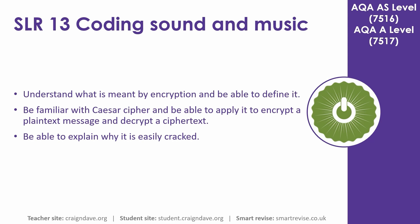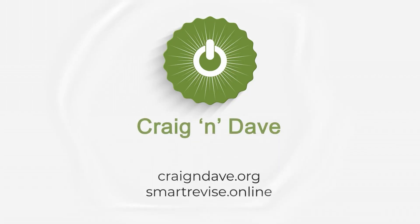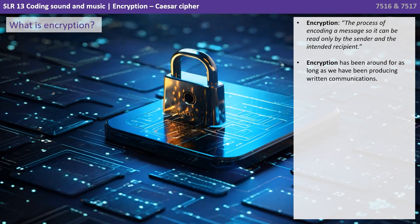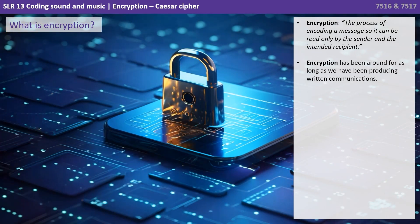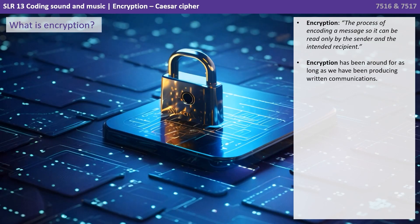In this video we understand what is meant by encryption and look at how to define it. We also become familiar with the Caesar Cipher. Encryption is the process of encoding a message so it can be read only by the sender and the intended recipient.